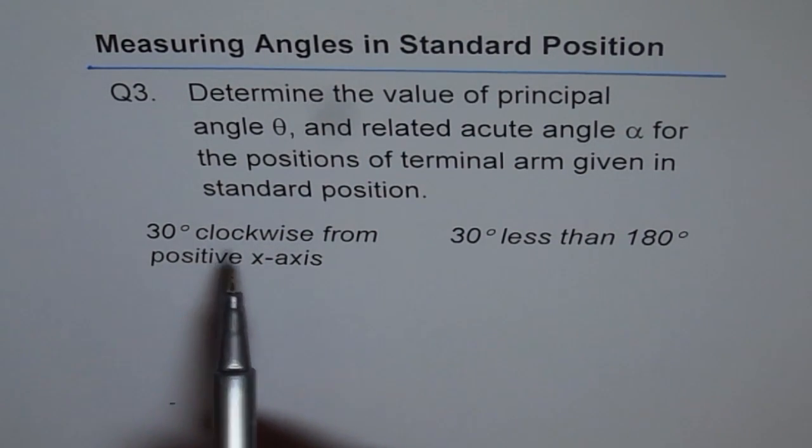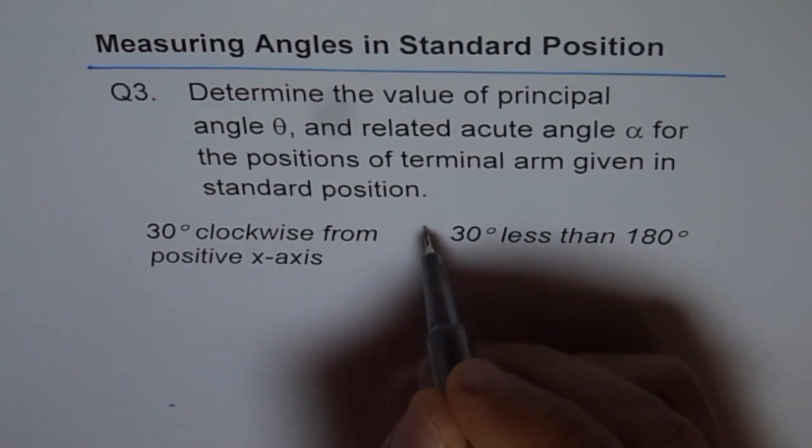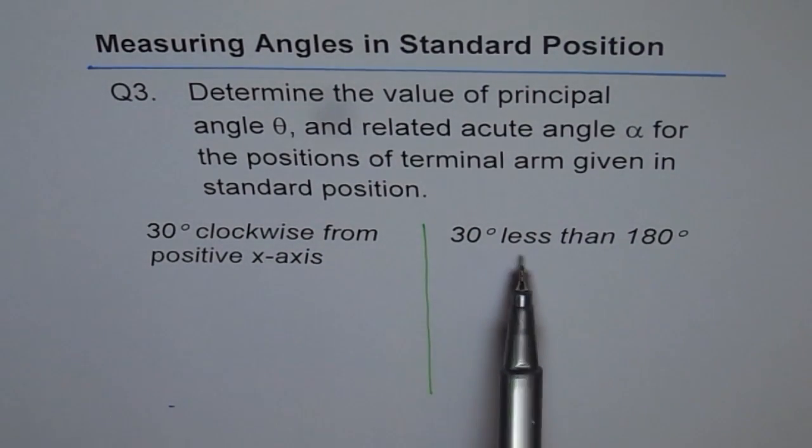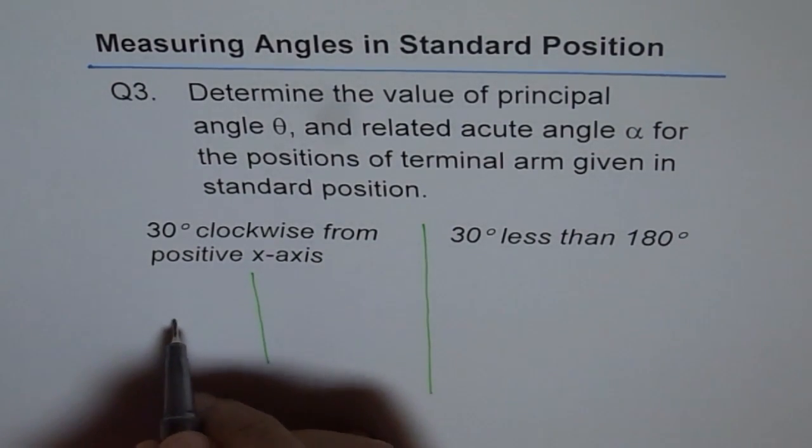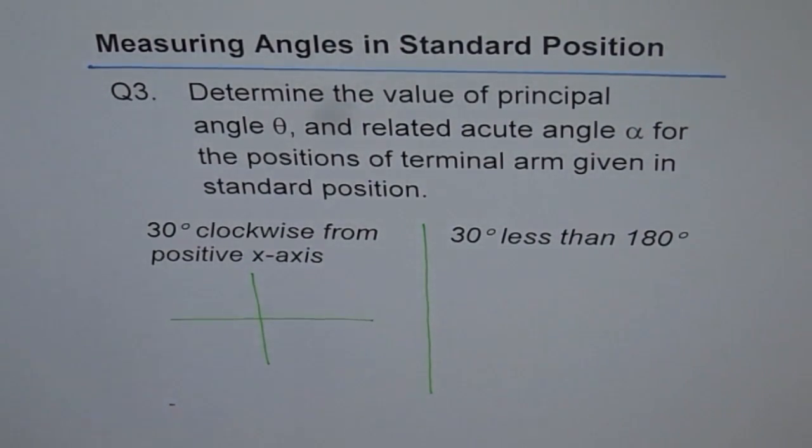Now it is 30 degrees clockwise from positive x-axis. The other one is, so we got 2 here, 30 degrees less than 180 degrees. Let's try to do it. So what we will do is, we will make a rough sketch. Rough sketch means literally rough sketch.